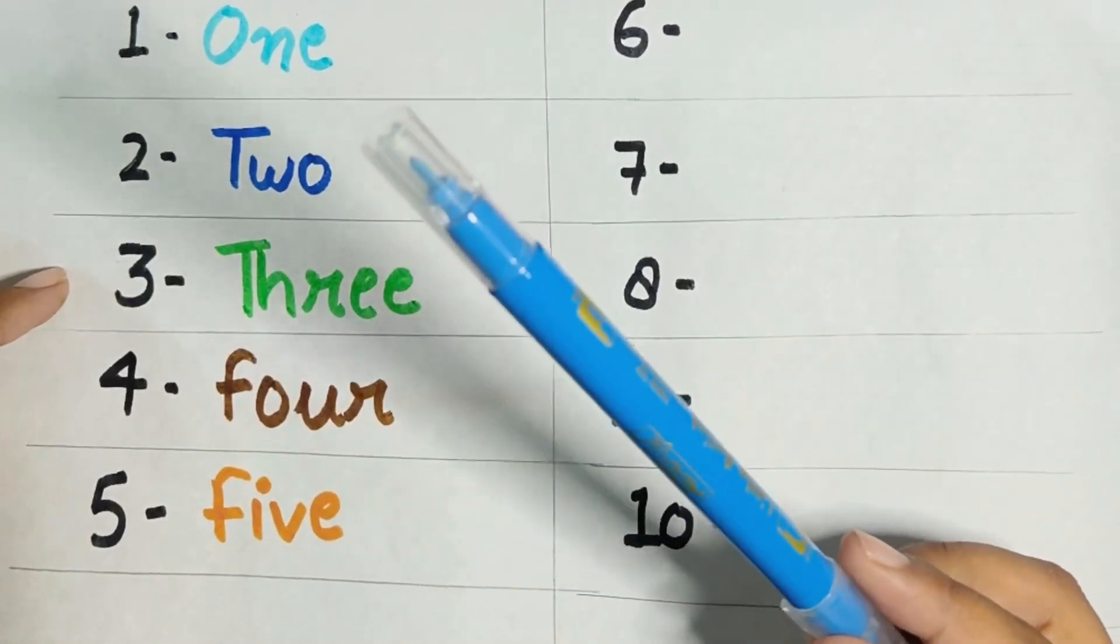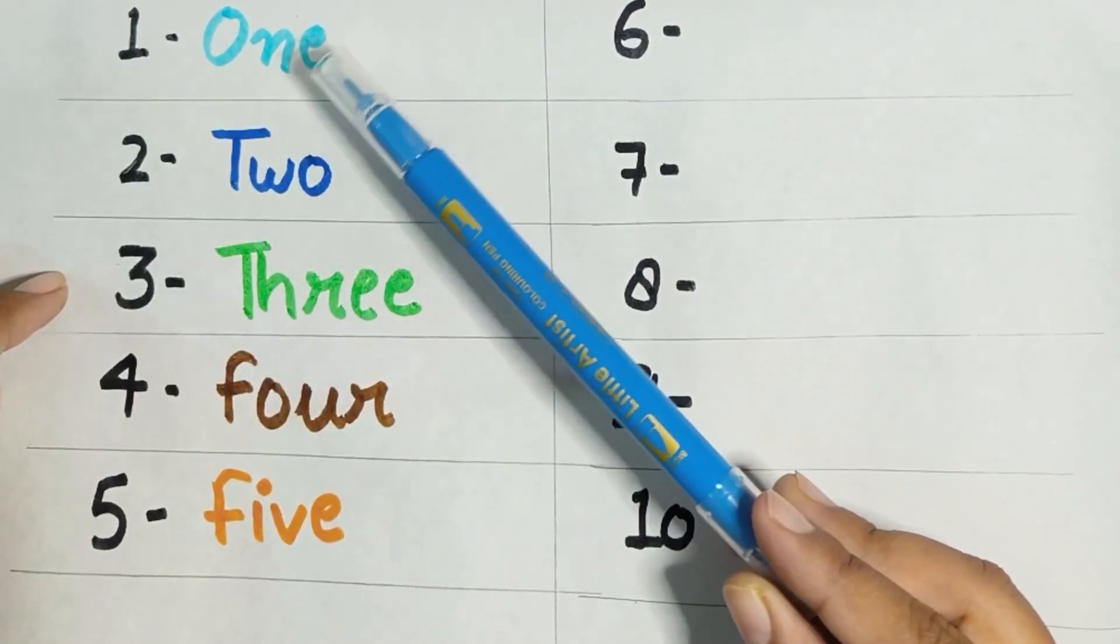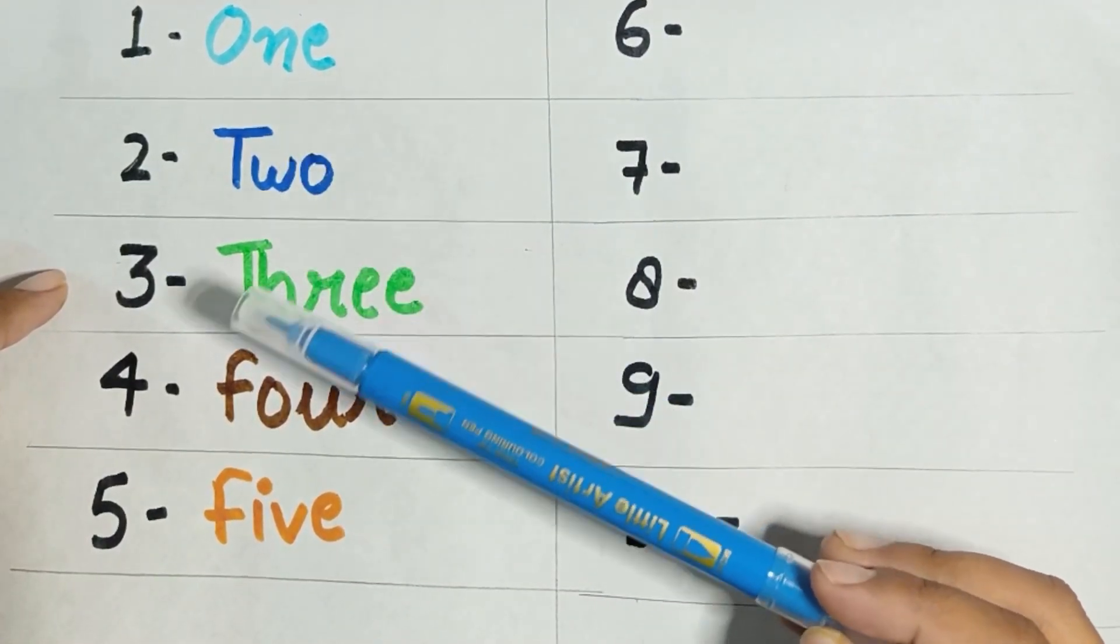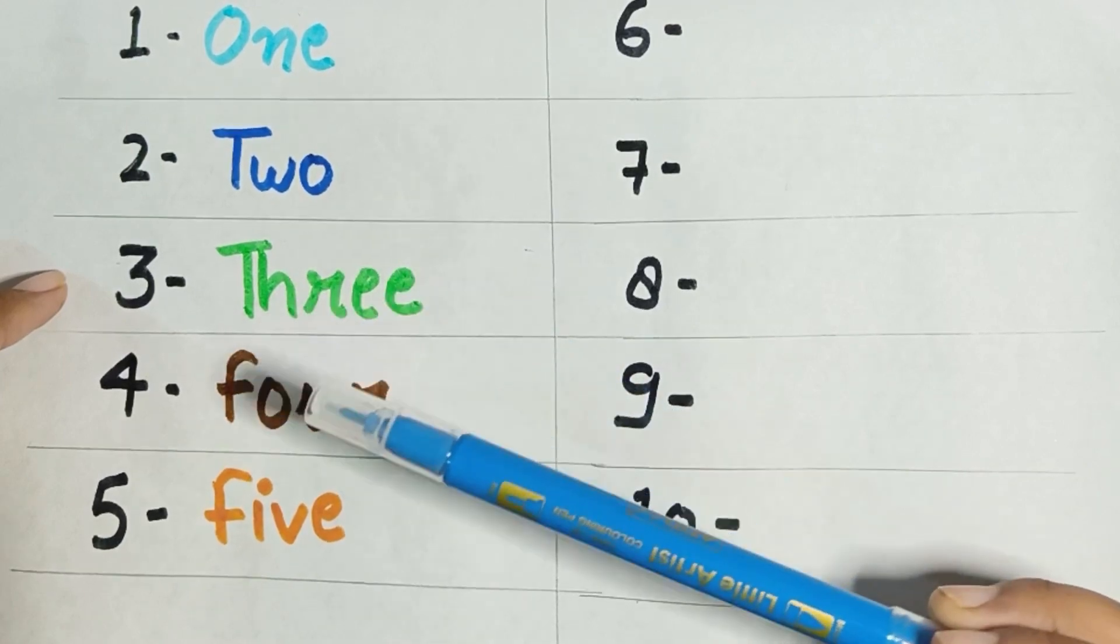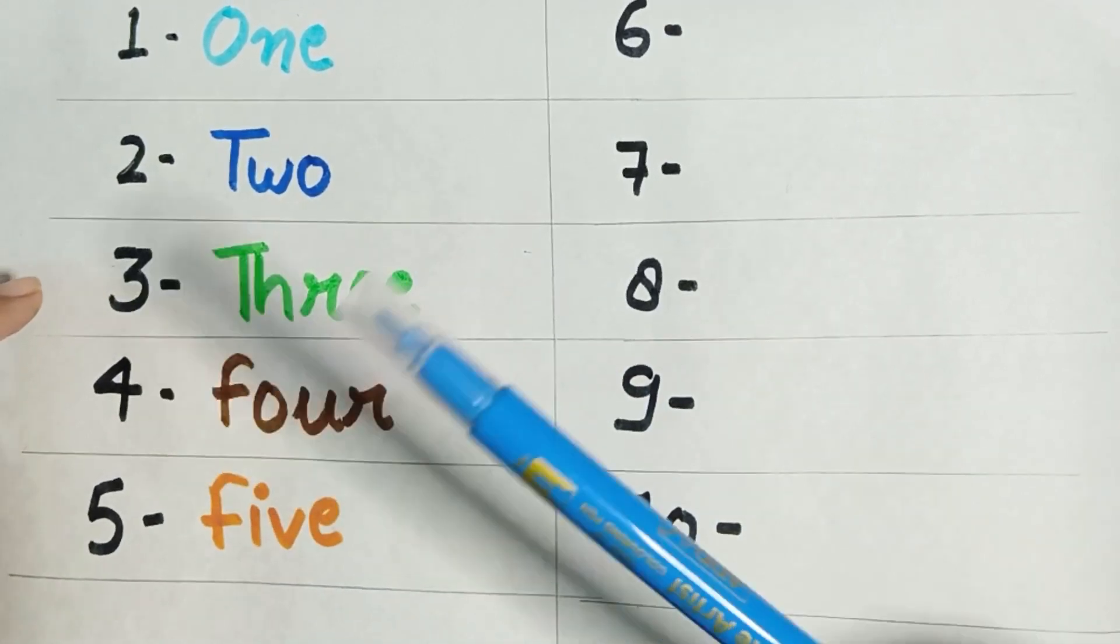Again, we are starting with sky blue color. O-N-E, one. T-W-O, two. T-H-R-E-E, three. F-O-U-R, four. F-I-V-E, five.